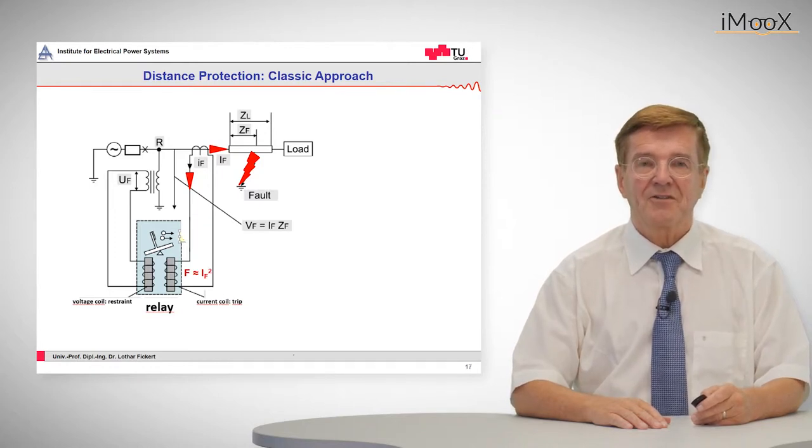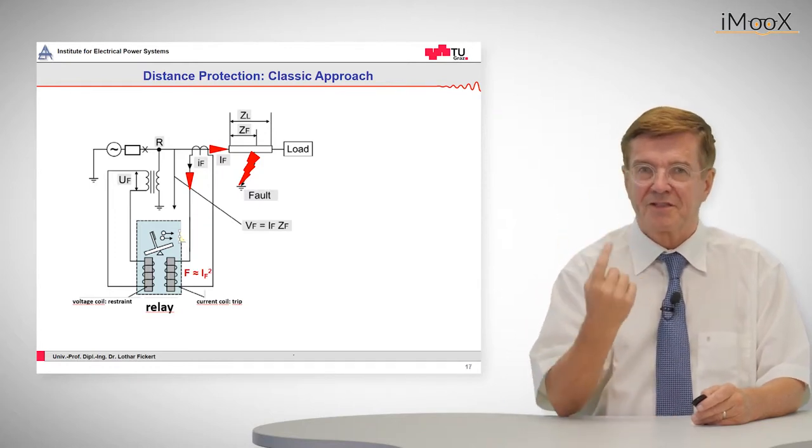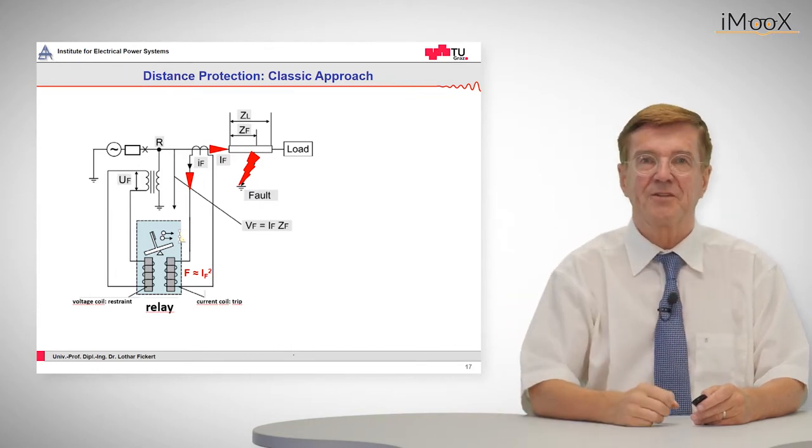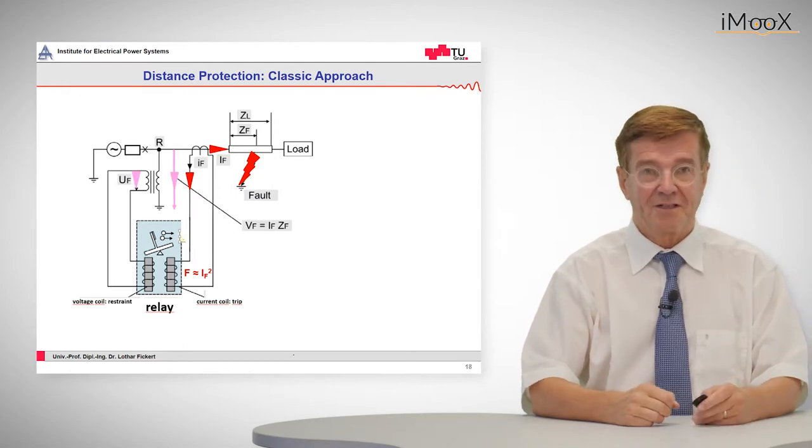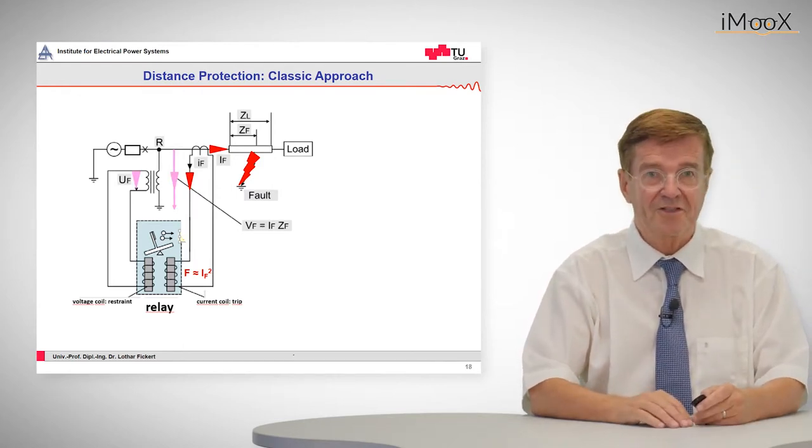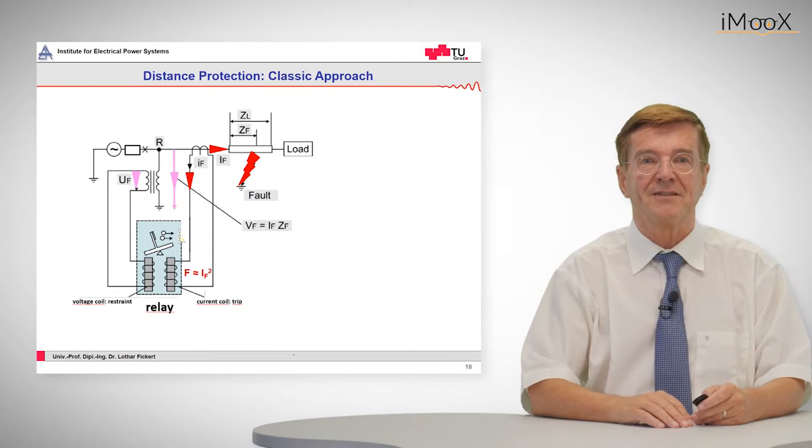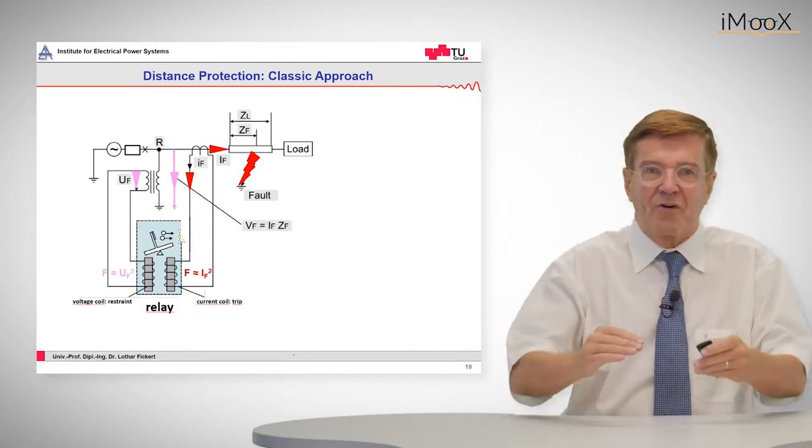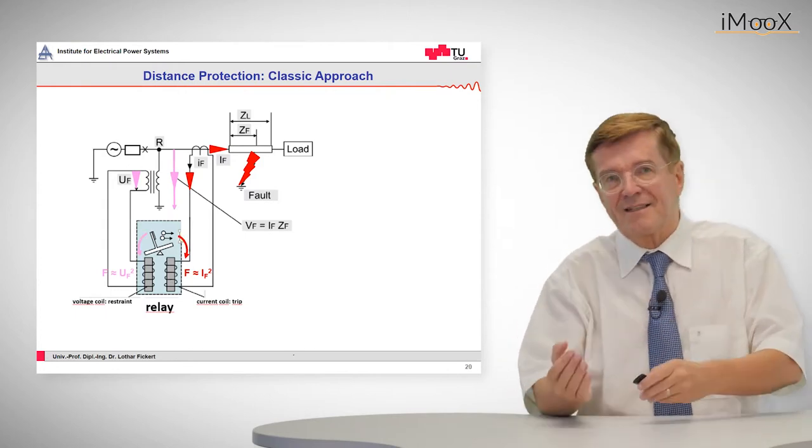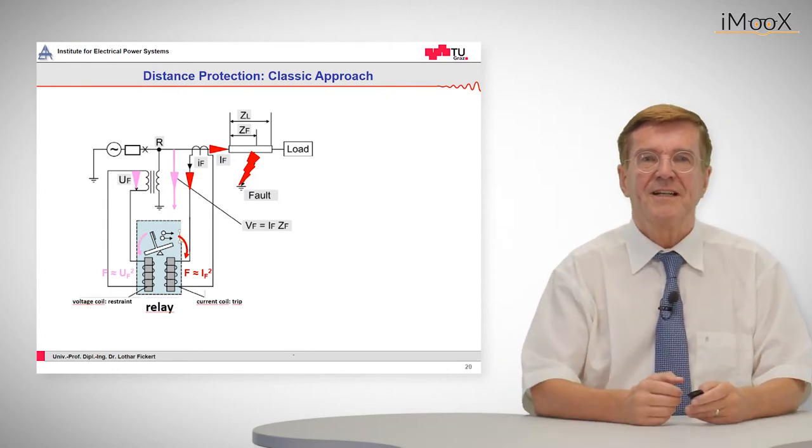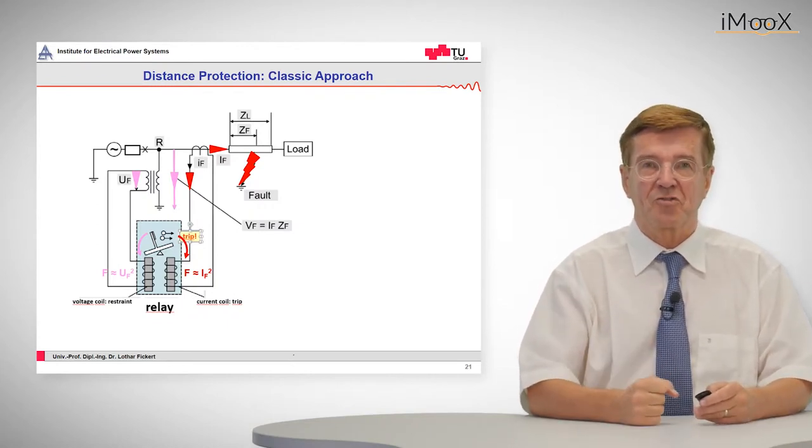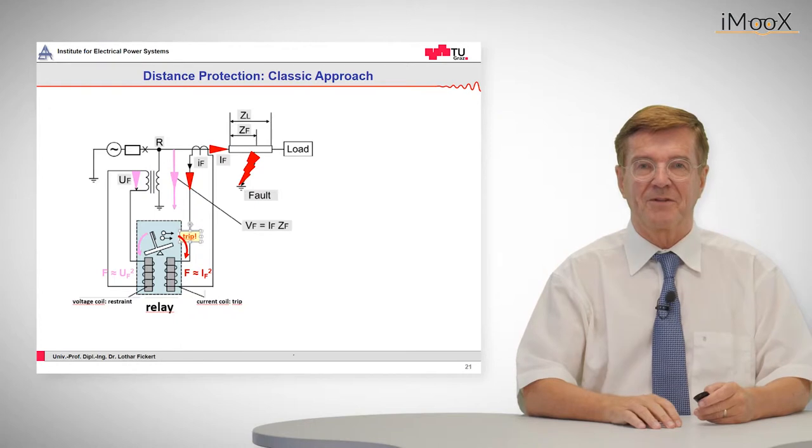So at the current coil we have a current flowing through this coil and it magnetizes and tries to pull this lever down to its side. On the other hand we have a voltage, a residual voltage, which magnetizes the restrained coil, the voltage coil, and these two forces act either to the right or to the left side. And if we have one point where they are equal the trip force is strong and we activate a trip.